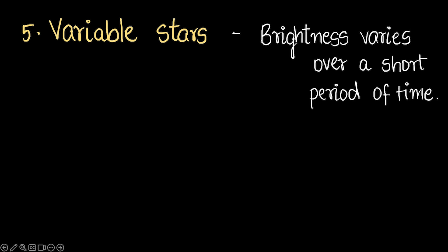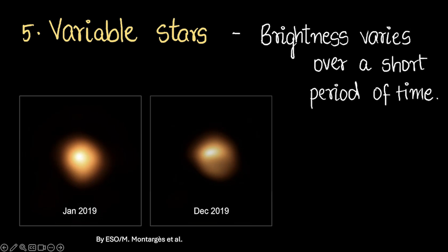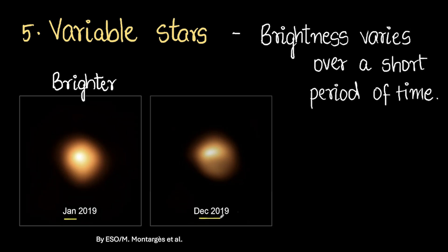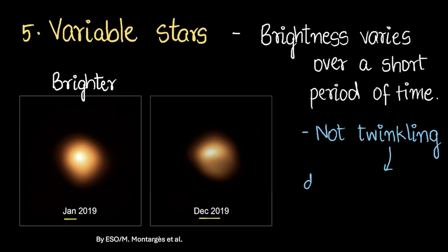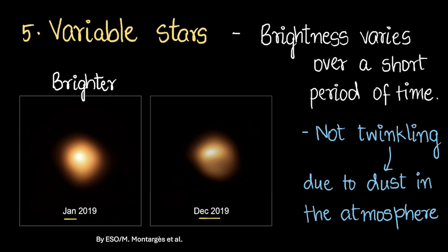Next are variable stars — stars whose brightness varies over a very short period of time. For example, look at this image: one side appears brighter than the other. The left-side image was taken in January 2019 and the right-side one in December 2019, showing the star's brightness has increased over time. You might wonder — isn't that just twinkling? No, twinkling is caused by dust and gases in the atmosphere. This is an actual increase or decrease in the amount of light produced by the star itself.